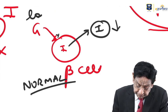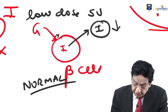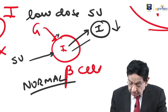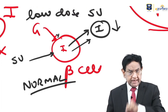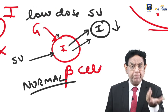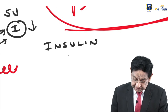The treatment of MODY is low-dose sulfonylurea. Sulfonylurea acts on receptors and causes release of insulin — the same action that glucose should do. In MODY, beta cells don't respond to glucose, but sulfonylurea is more powerful and can trigger insulin release. That's why sulfonylurea are also known as insulin secretagogues.